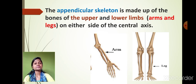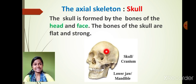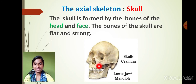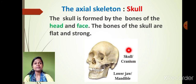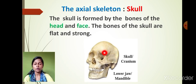In the axial skeleton, the skull is made up of the bones of our head and face. The face bones and head bones together form the skull. The bones of the skull are flat, and the skull protects the soft organ we call the brain. The important function of the skull is to give protection to the brain.